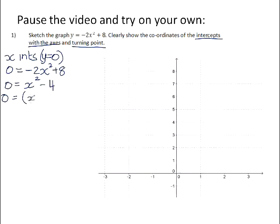We can factorize, that is the difference of two perfect squares, and it factors into x plus 2, x minus 2, which means that x equals negative 2, or x equals positive 2. So my x-intercepts will be negative 2 and 0, and 2 and 0.